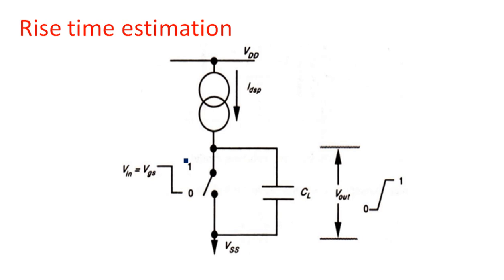Rise time estimation: during the rising period we are going to calculate the time taken by the capacitor to charge up to a maximum of VDD, because VDD is the maximum input. As the PMOS transistor is in ON state, we replace the ON transistor with a constant current source, and the current will be IDSP coming from VDD. The input is changing from 1 to 0, and that is why the NMOS transistor is in OFF state.